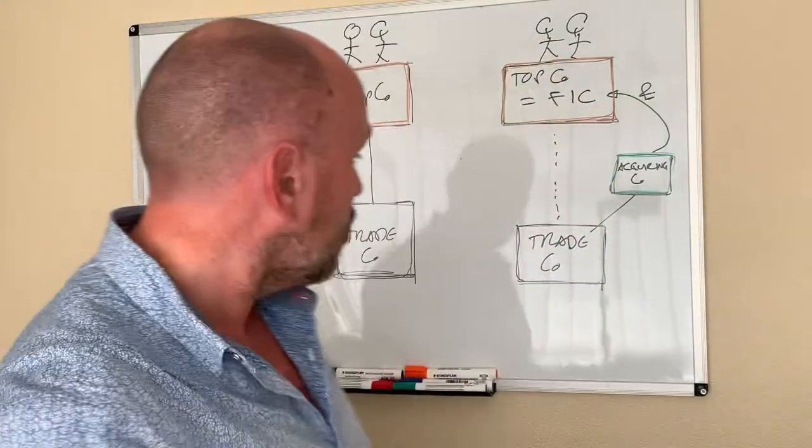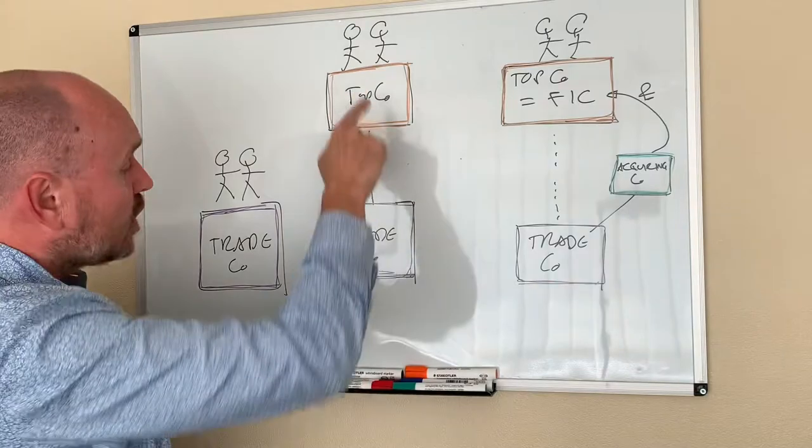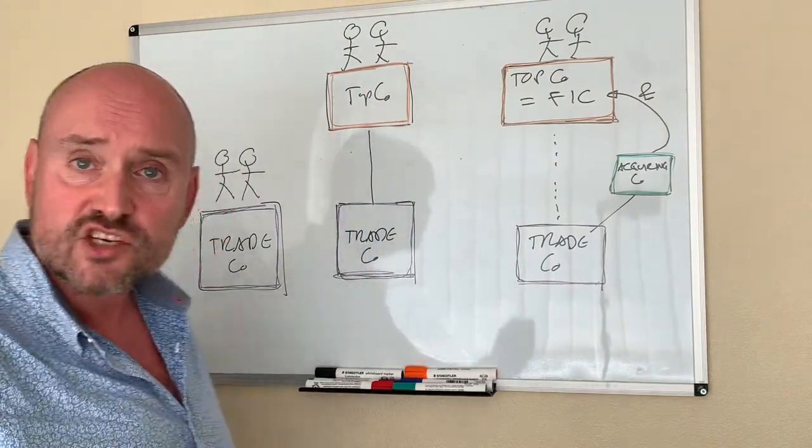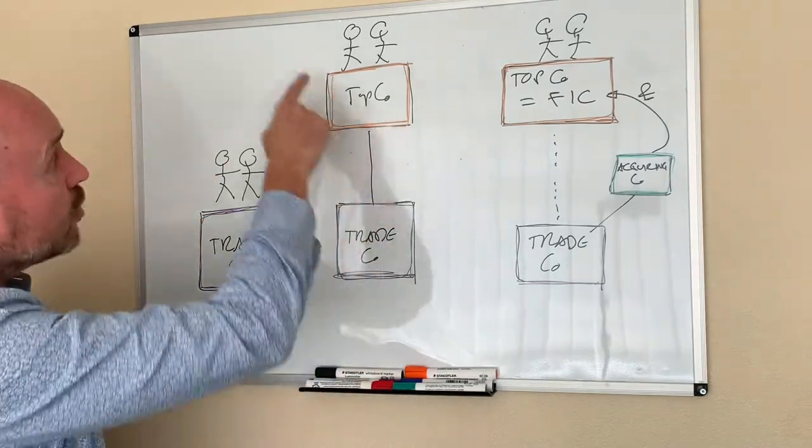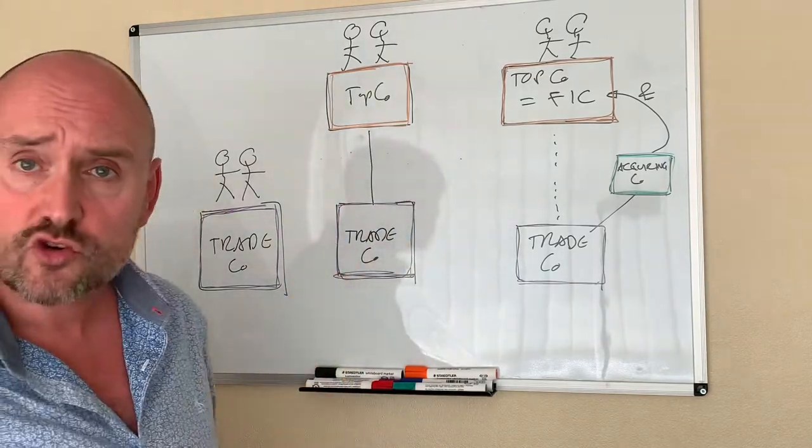So we've inserted a TopCo above the TradeCo. It's what we call a share for share exchange. The shares in the TopCo are exchanged for the shares in the bottom co. So the husband and wife own the TopCo, which in turn owns the TradeCo.